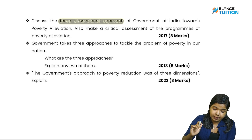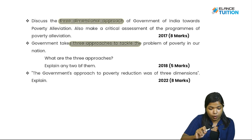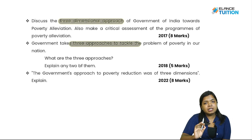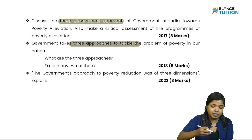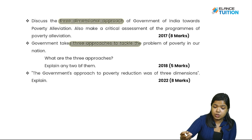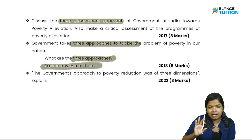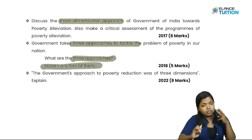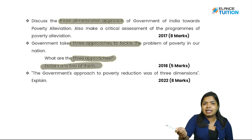In 2018, the question was: the government takes three approaches to tackle the problem of poverty. What are the three approaches? Explain any two of them. That is why we write about the three approaches and the critical assessment.